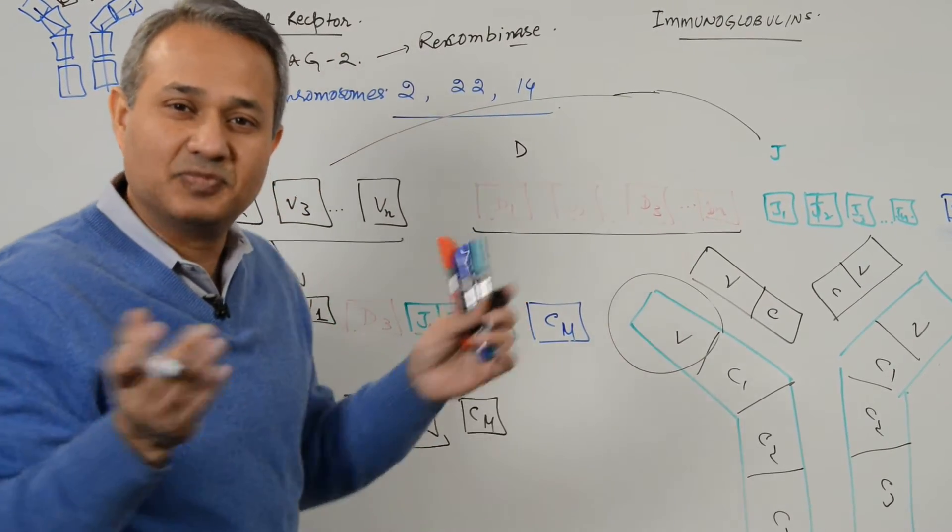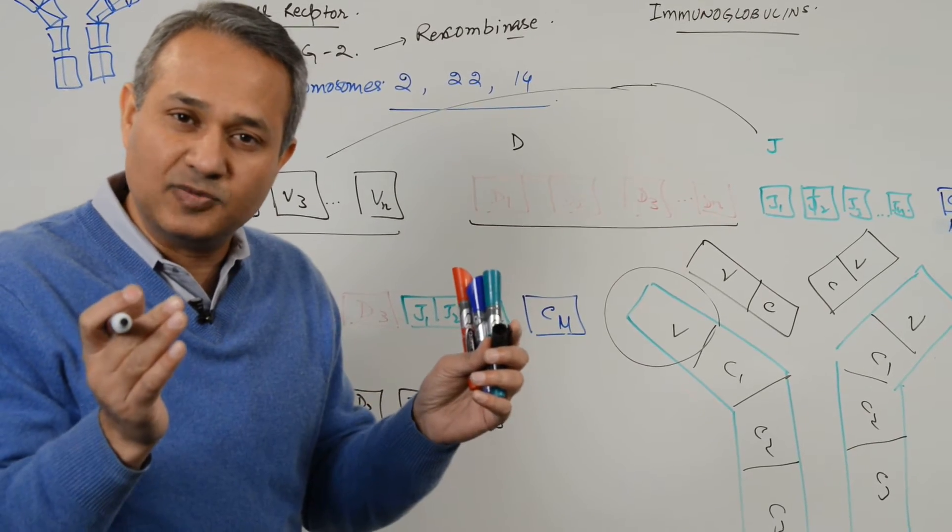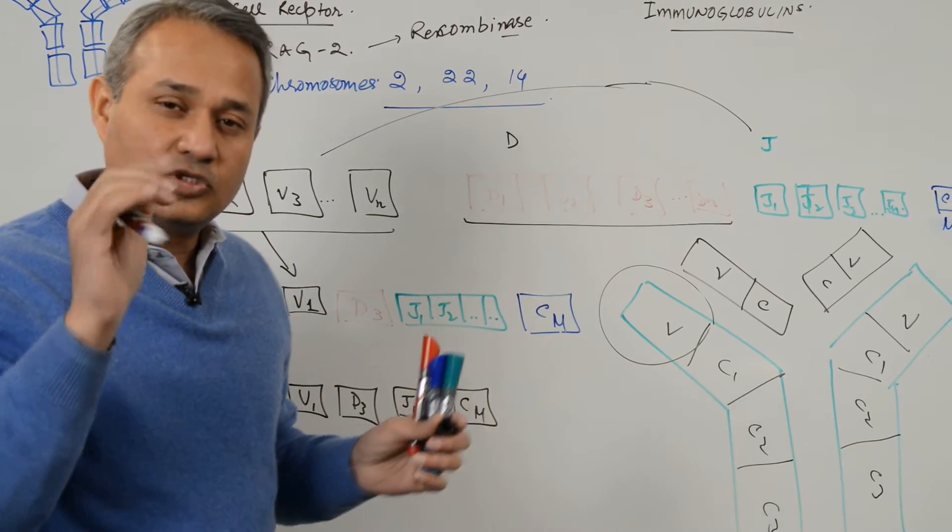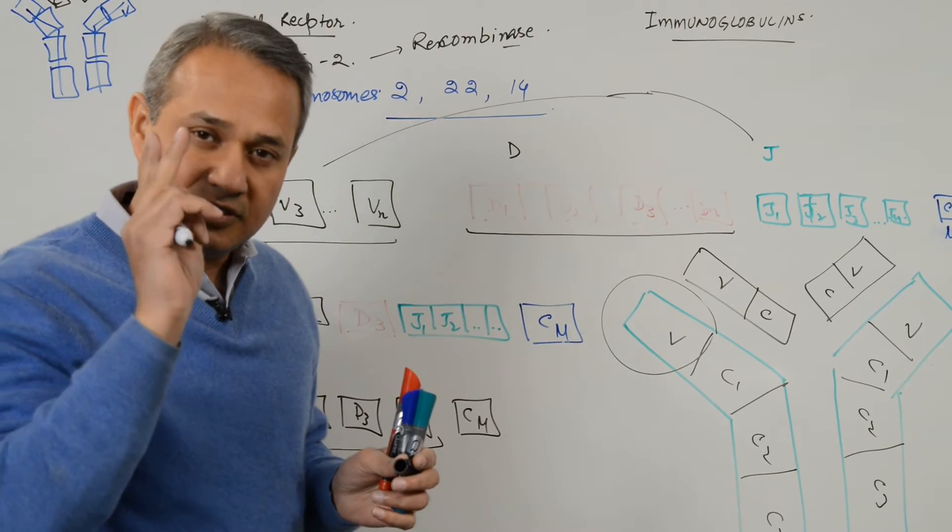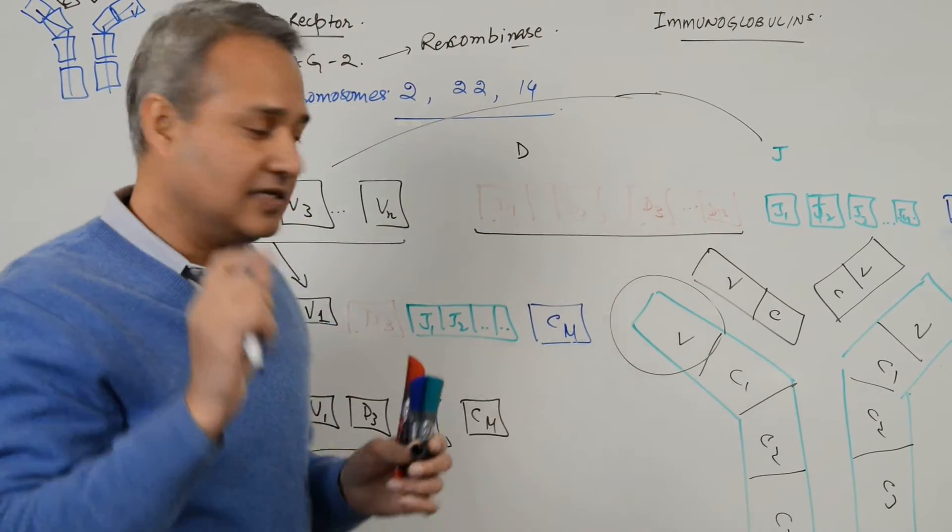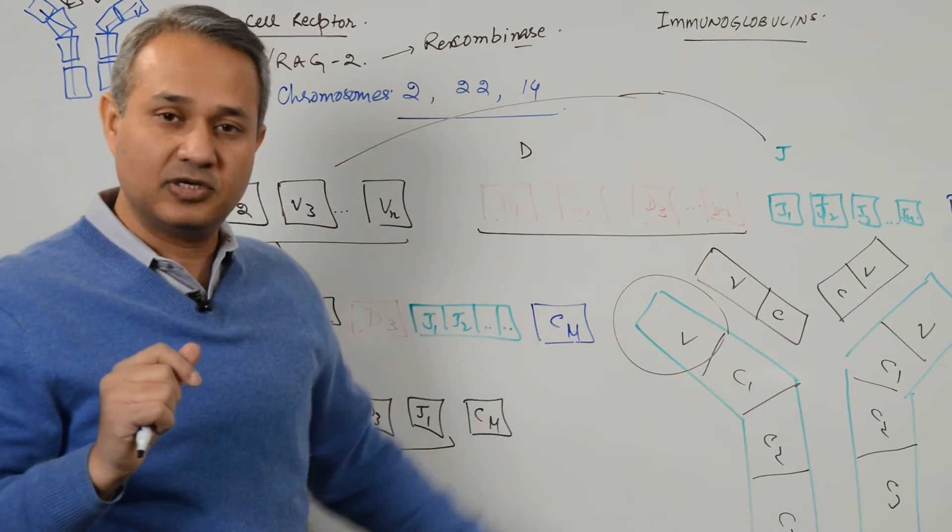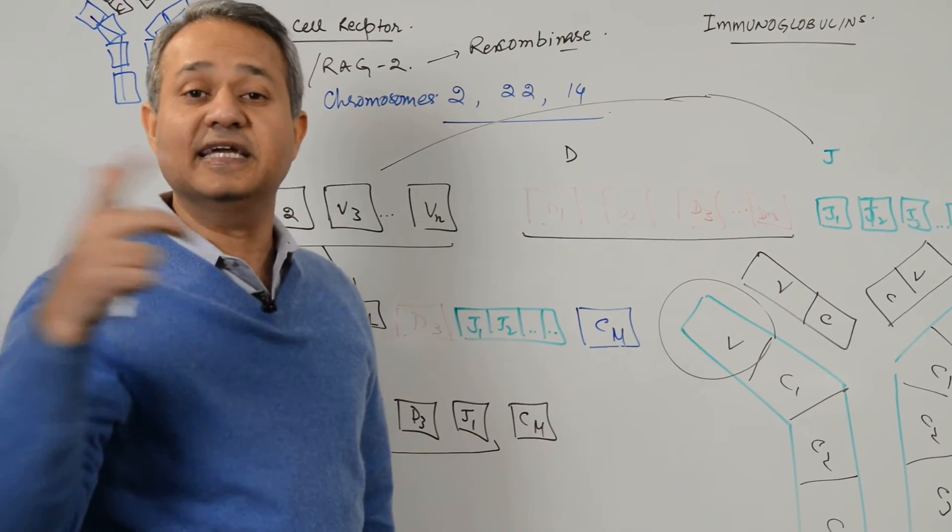So light chain is lighter, it is smaller, the gene pool is smaller as well. So what is that? V and J. So light chain variable region is recombination of V and J genes.